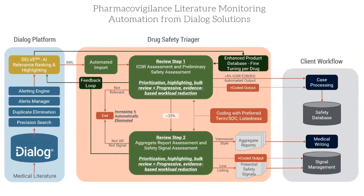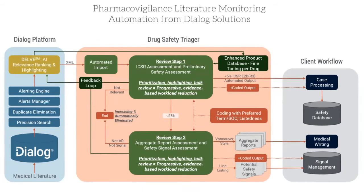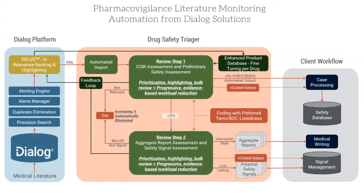In the first step, literature reviewers assess every reference for ICSR and eliminate those that are irrelevant for safety. The Drug Safety Triager directs only 20-30% of the references to the product safety specialists, allowing them to perform the aggregate reports and safety signals after the more time-sensitive ICSR review.